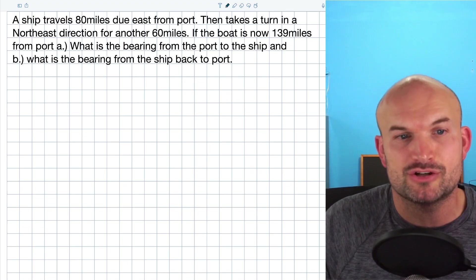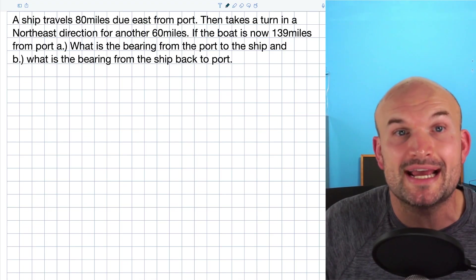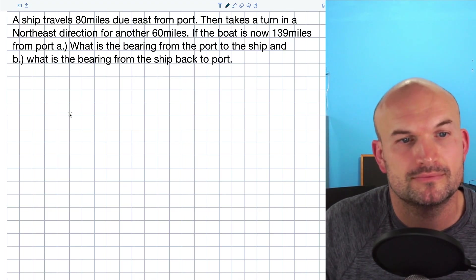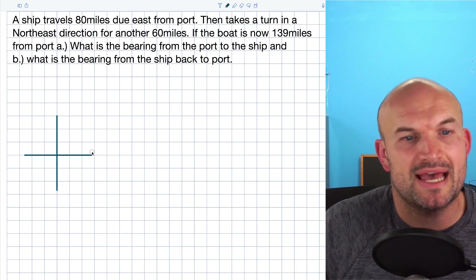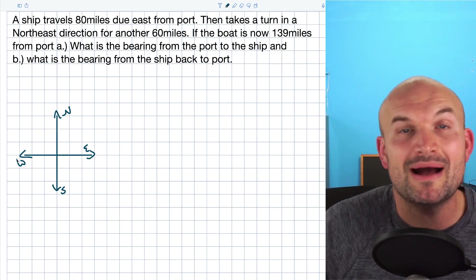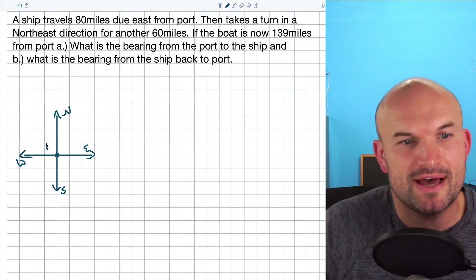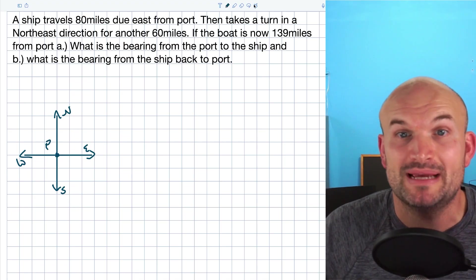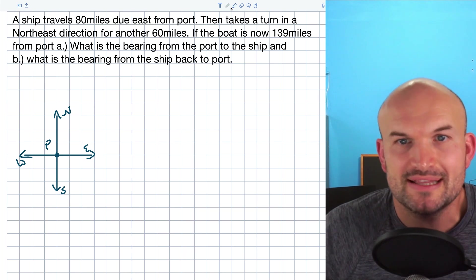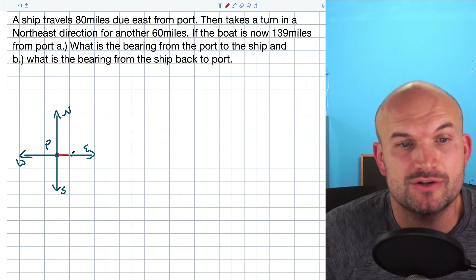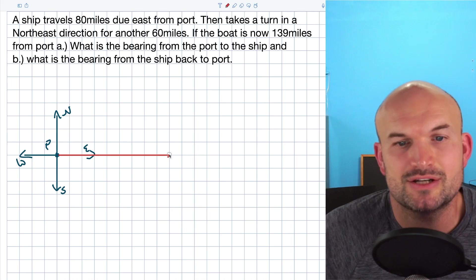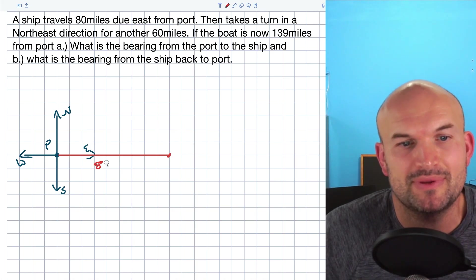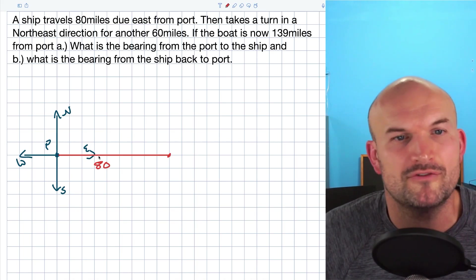So I have a ship that travels 80 miles due east. Whenever I have this kind of bearing and direction, the first thing we're going to do is create a cardinal direction — north, east, south, and west. We have this point here, which we'll call P for our port. It says the ship travels 80 miles due east, so I'm going to draw a line going out to the east and label that 80 miles.